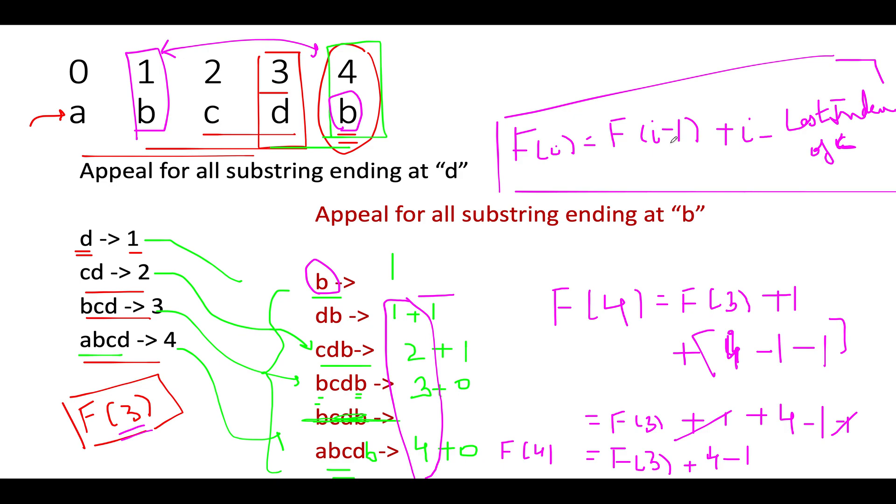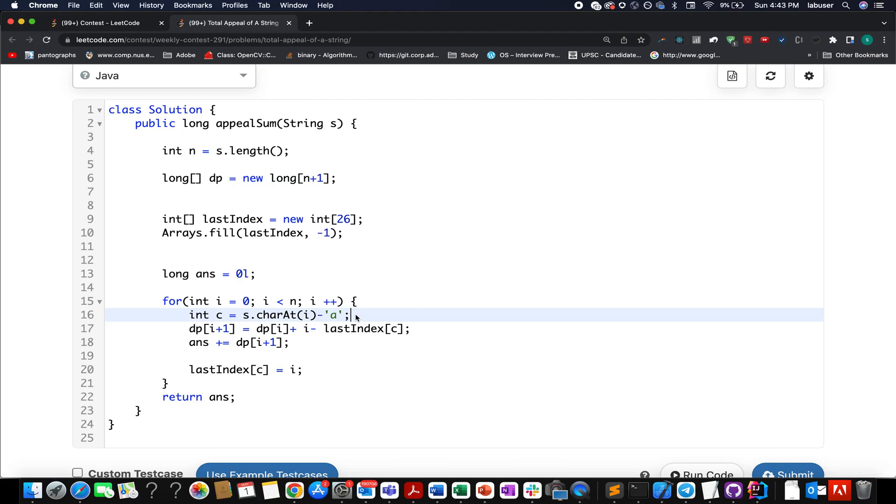To conclude it further, let's quickly walk through the coding section and we will compute these F of i values starting from the 0th index up till the 4th index, sum those up together, and this will give us the final result. Here I have created the dp array of size n plus one, where n signifies the length of the input string, and plus one for taking care of the corner cases.